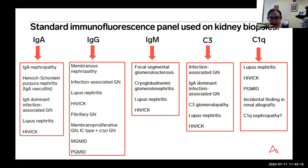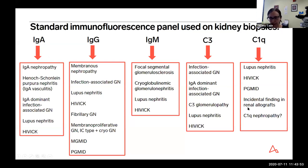Good morning everyone. I'm going to continue where Dr. Sharma left off with immunofluorescence and electron microscopy. We use a standard immunofluorescence panel on all kidney biopsies — both native and allograft. The routine stains include IgA, IgG, IgM, C3, C1Q, and kappa and lambda light chains. Depending on the pattern within glomeruli, which renal compartments are affected, and the character of staining, you can distinguish among many immune complex-mediated diseases.